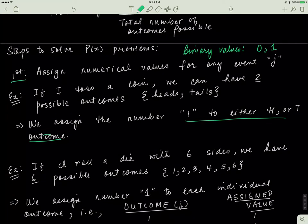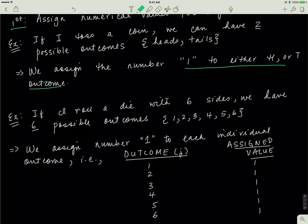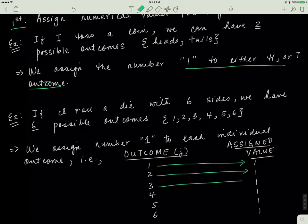We have to assign a binary value to each individual outcome, converting them to the language of mathematics. So each outcome — 1, 2, 3, 4, 5, or 6 — gets assigned a value of 1. The total outcomes are 6.